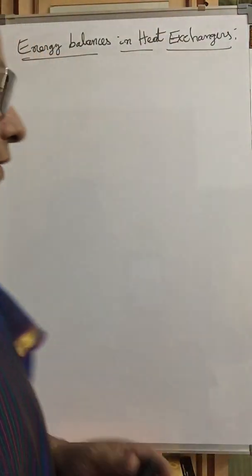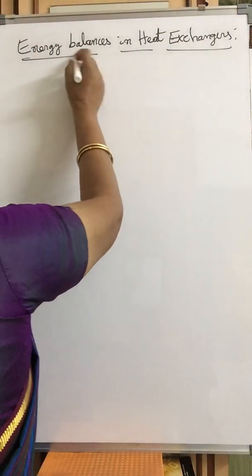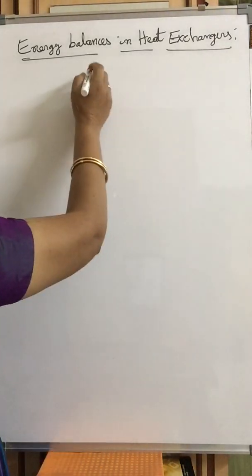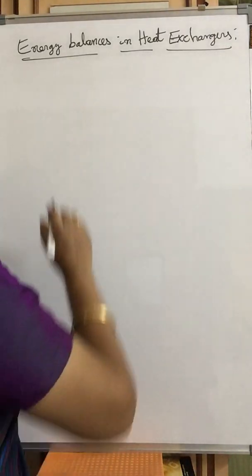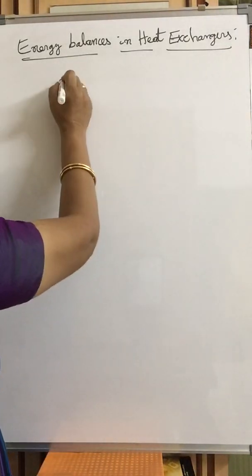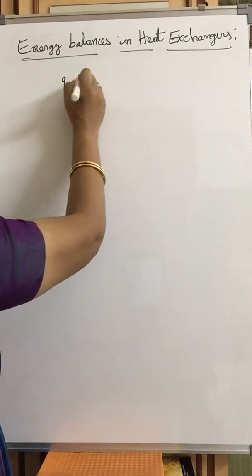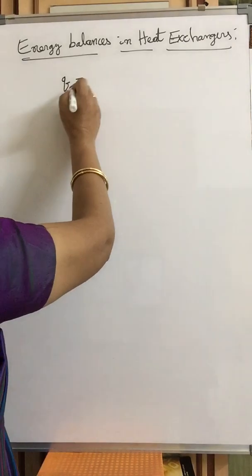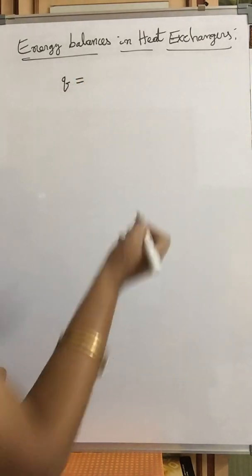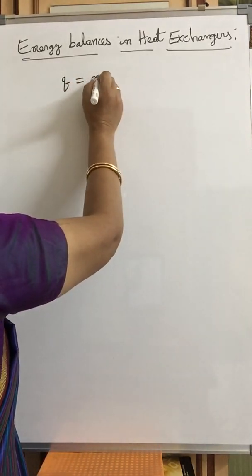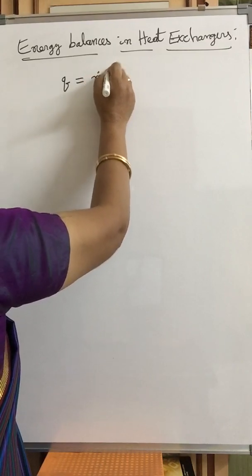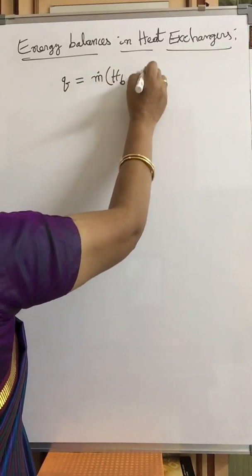So we will start writing the energy balances in heat exchangers. After assuming these things, we can write the expression for the quantity of heat that is transferred. That is in terms of enthalpy, we can write Q equal to Ṁ into HB minus HA.